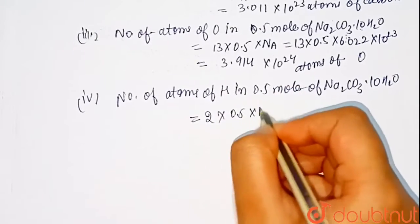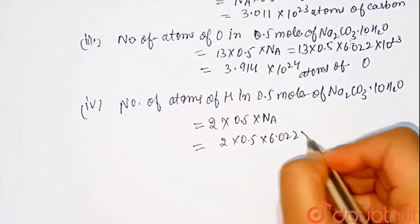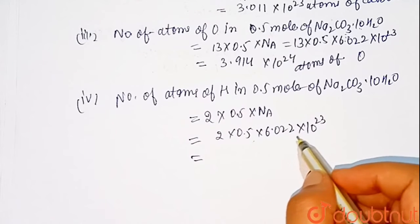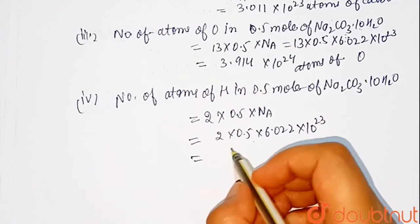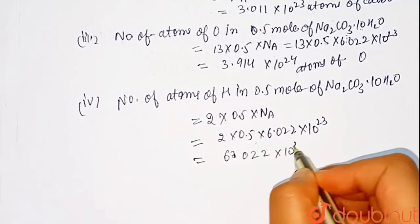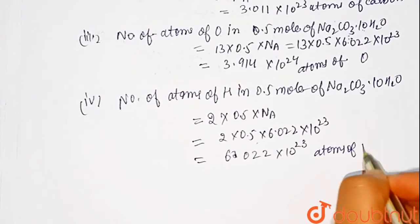So, 2 times 0.5 times NA which equals 2 times 0.5 times 6.022 times 10 raised to power 23 which equals 6.022 times 10 raised to power 23 atoms of hydrogen.